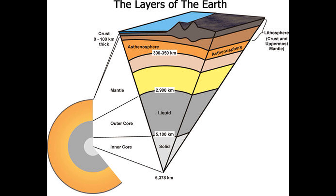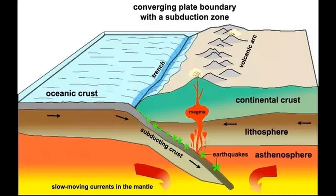We live on the crust, specifically continental crust. Meanwhile, the oceans sit atop the aptly named oceanic crust. The crust, as well as part of the upper mantle, is called the lithosphere, and this includes the tectonic plates. Just below that is the asthenosphere, which is also part of the upper mantle, and the plates ride along this layer. We often imagine the stuff underneath the crust to be more or less like the liquid lava spewing out of a volcano. However, due to extreme pressure, the mantle consists mostly of a highly viscous substance, which acts as a fluid over vast time spans.